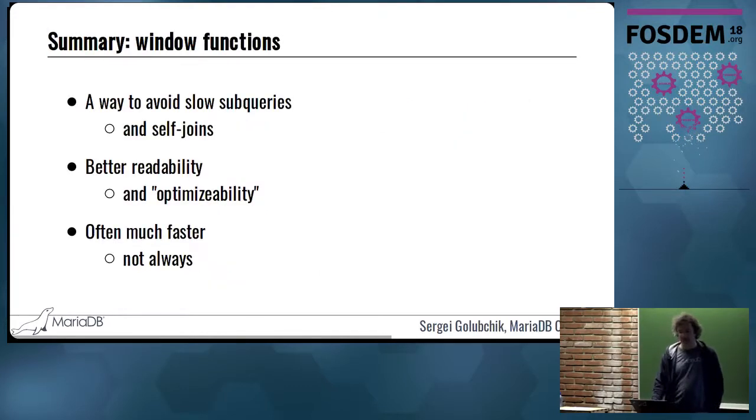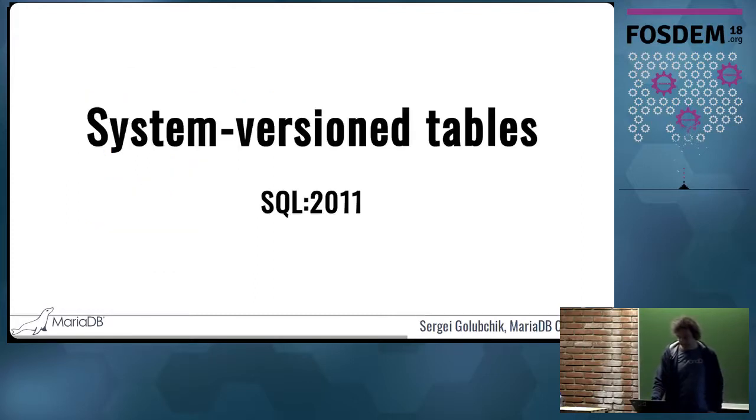So what are window functions? Window functions provide a useful way to avoid slow subqueries and self-joins. They provide better readability. And what's important, you can better convey the meaning of what you want to do to the optimizer, so it can optimize the query better. That results in much faster queries. Now, fast forward in time, we get SQL-2011.